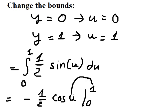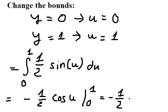Substituting the bounds: cosine of 0 equals 1, so the final answer is 1/2. This is the end — thank you for watching.